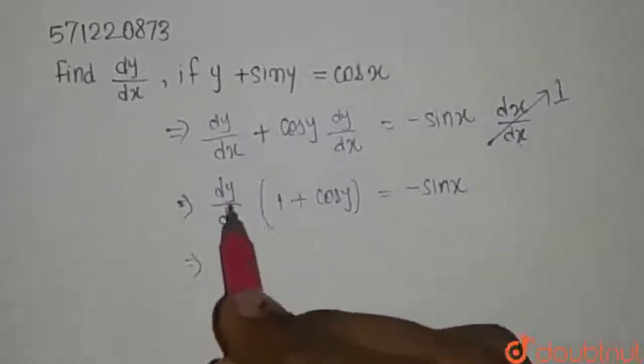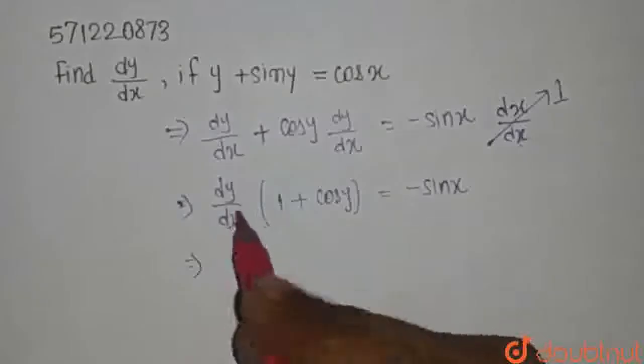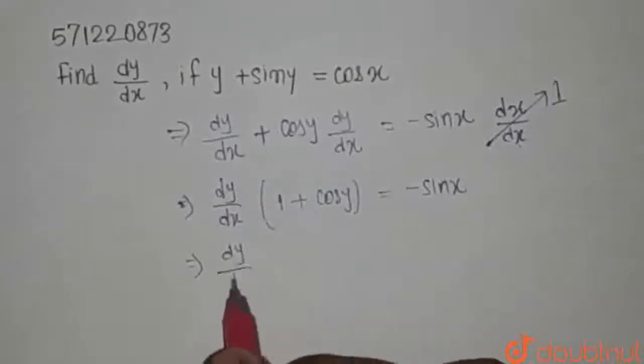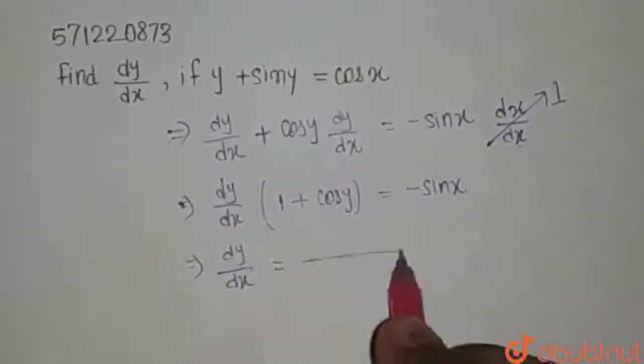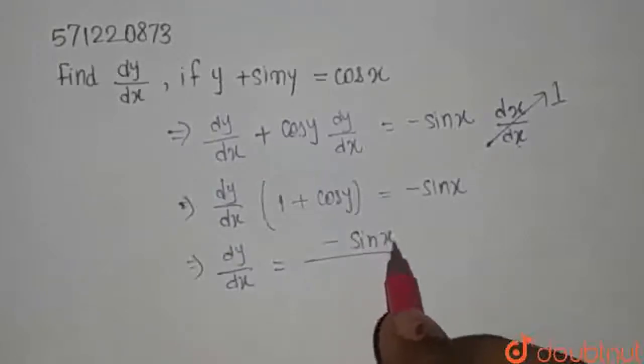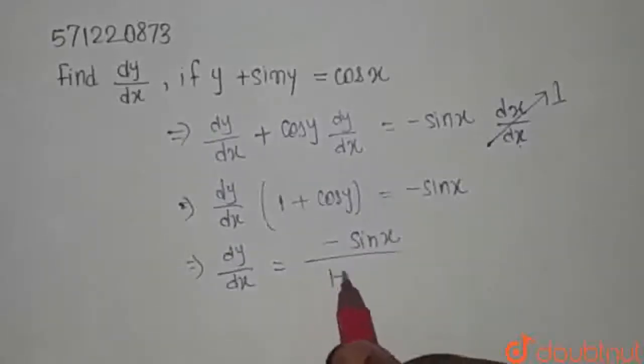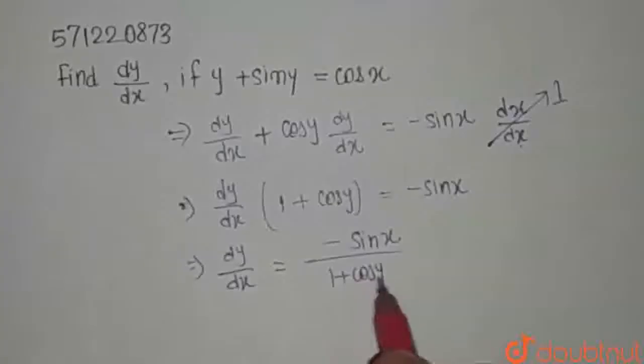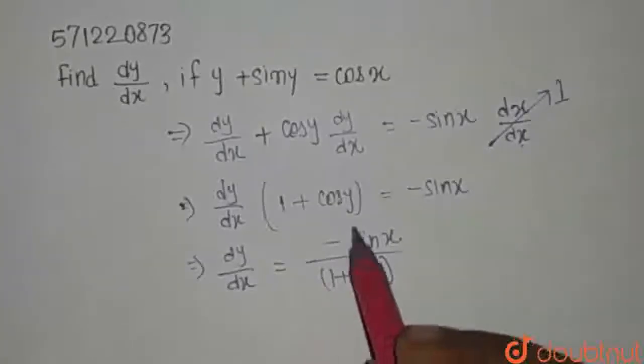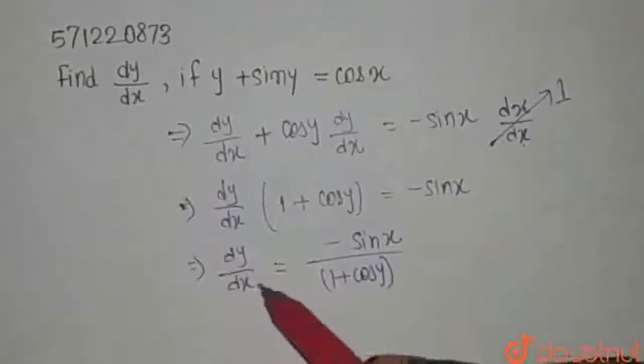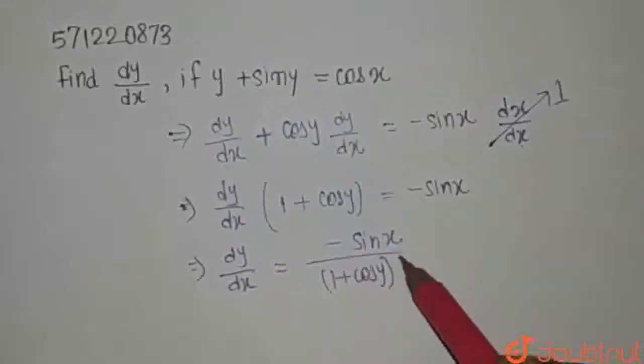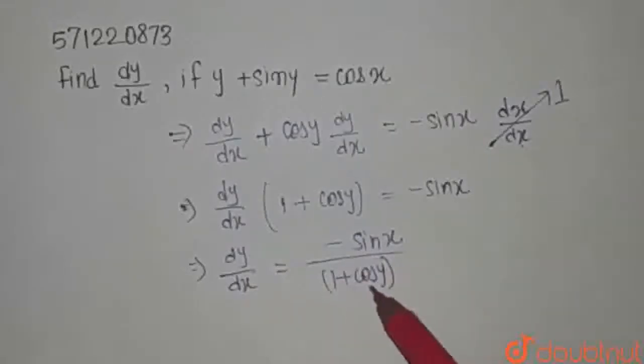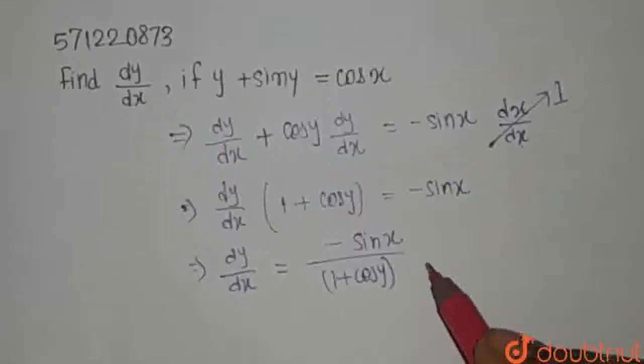Now, we need to find dy by dx. So, here we have got dy by dx. So, dy by dx equals minus sin x divided by 1 plus cos y. So, the required dy by dx expression is minus sin x divided by 1 plus cos y. Thank you.